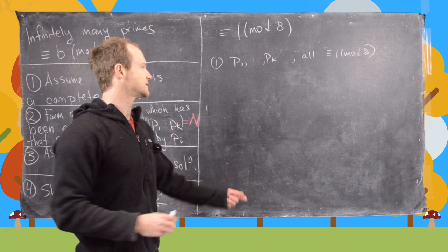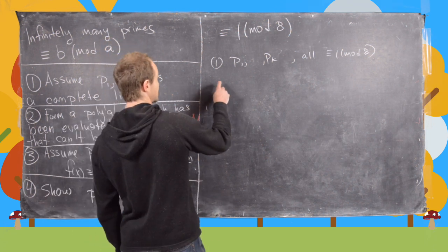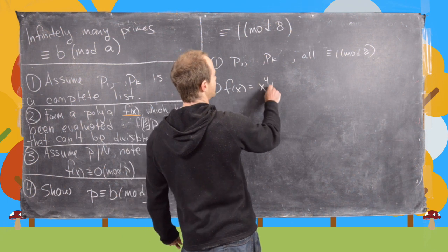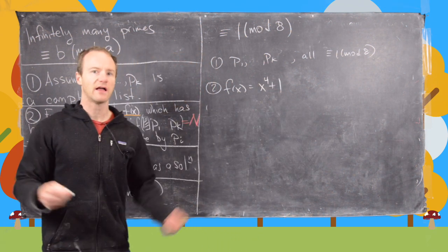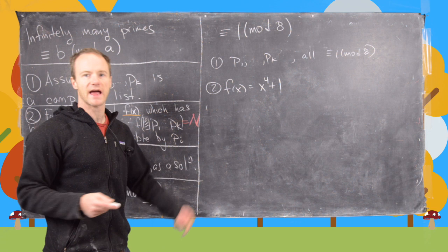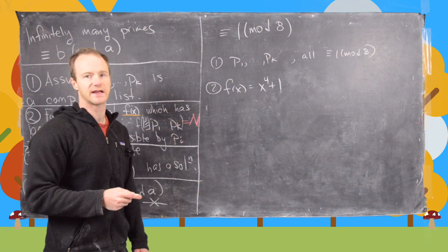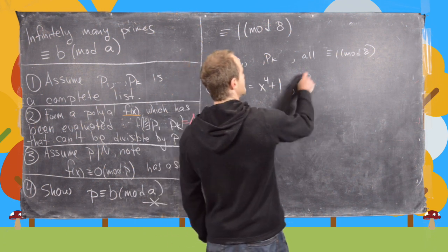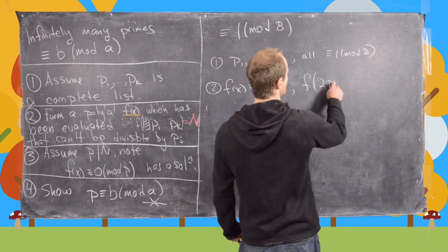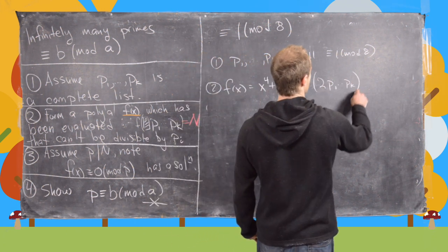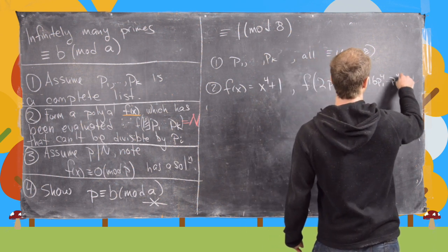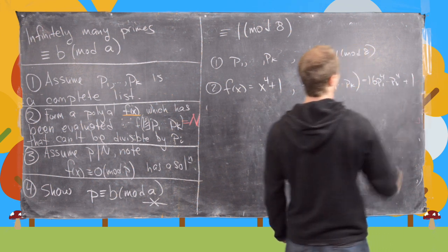Now something different goes on in this case. Let's set f of x equal to x to the fourth plus 1. So I'll let you guys play around with it and see why x squared plus 1 doesn't work like it did in the last example, but it doesn't. And then take f of 2 times p1 up to pk, so notice that's going to be 16 p1 to the fourth up to pk to the fourth plus 1.